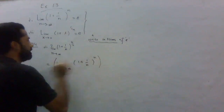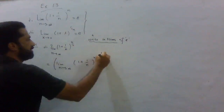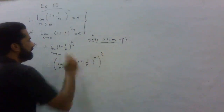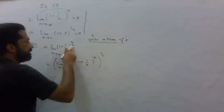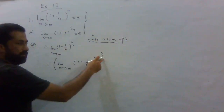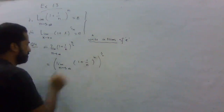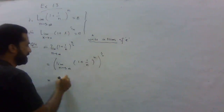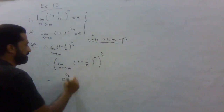The whole power is 1/2. We can write the exponent as n/2, which is n × (1/2). So the expression becomes [(1 + 1/n)^n]^(1/2), and by the standard limit formula, (1 + 1/n)^n = e. Therefore the answer is e raised to the power 1/2.